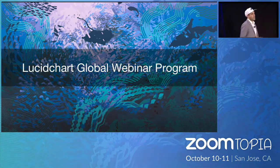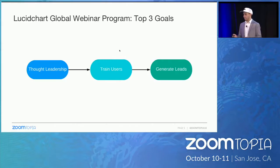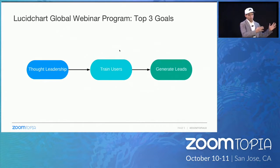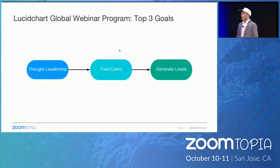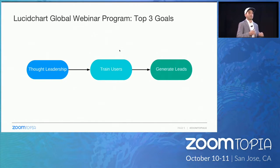Our webinar program started with three main objectives. If you haven't launched your webinar program yet, you first need to sit down with marketing, sales, operations, etc., and figure out why you want to do webinars. For us at Lucidchart, it was: number one, increase our thought leadership in specific verticals for increased awareness and recognition; number two, lead generation; and number three, train our users on how they can use Lucidchart for specific reasons relevant to them.